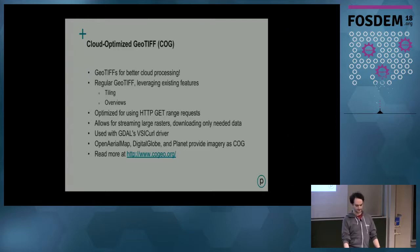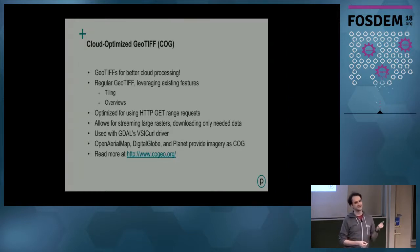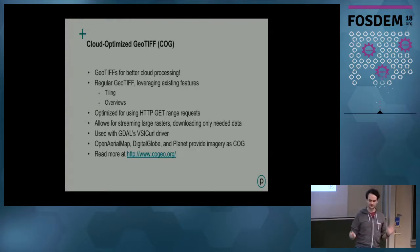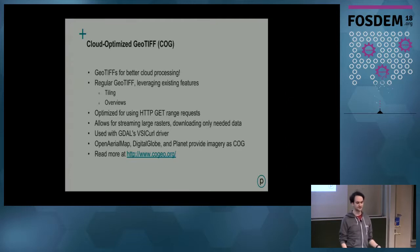If you're using the VSI curl driver in GDAL, you can basically just put the URL of the image in there. If you're getting it from OpenAerialMap, DigitalGlobe, Planet — the Landsat 8 bucket on AWS is also in this format, and there's a whole bunch more. Cogeo.org has a lot more information about this. It can really save on download times by not having to download the whole raster just to get the small piece you need.